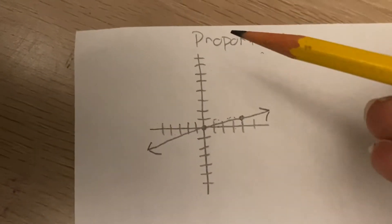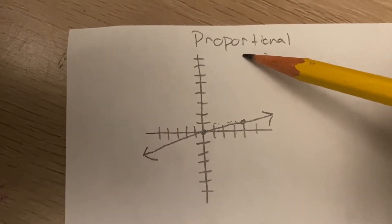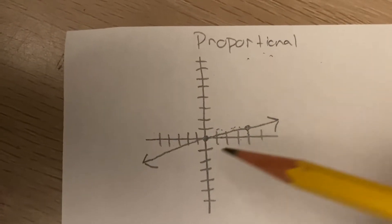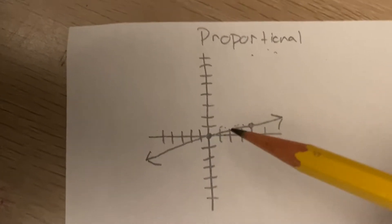Okay, so first let's talk about when a graph is proportional. We know that a graph is proportional when it goes through 0, 0, the origin, or the middle of the graph.